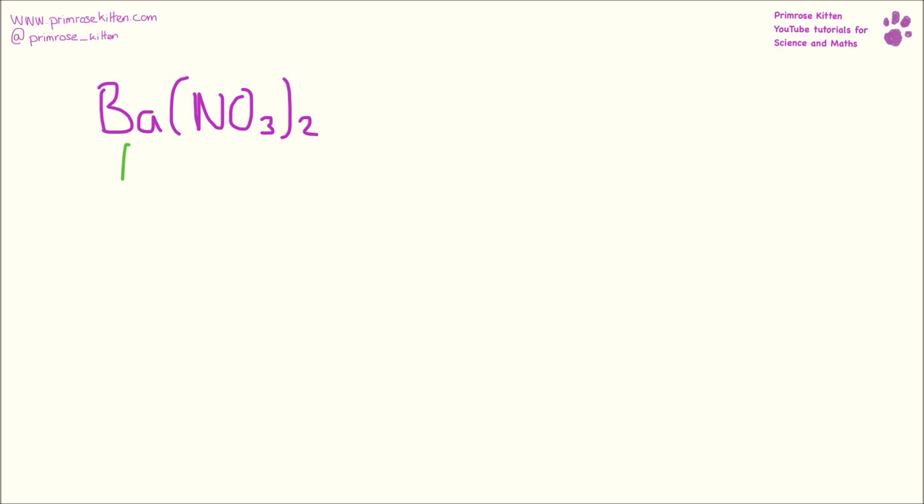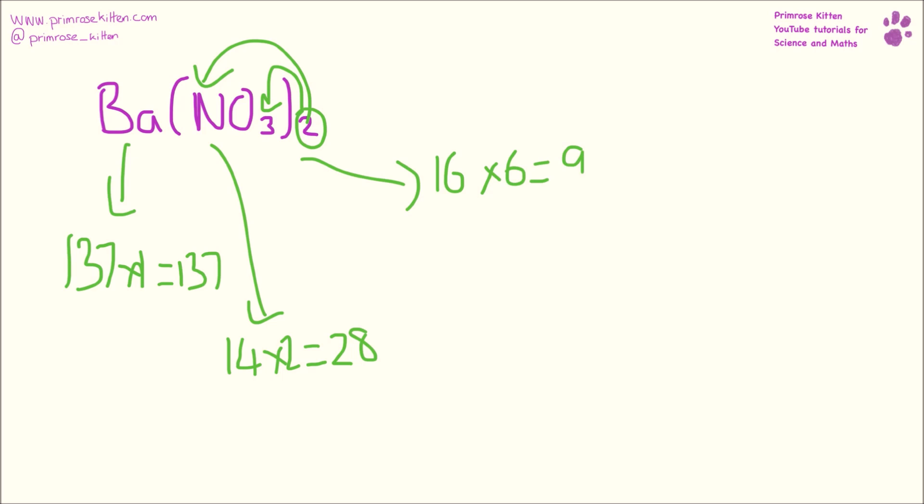Here we have barium nitrate Ba(NO₃)₂. Barium has a mass of 137 and there is one, giving us 137. Nitrogen has a mass of 14 and there are two of them, giving us 28. Oxygen has a mass of 16 and there are six of them, giving us 96. So 137 plus 28 plus 96 gives a total of 261.